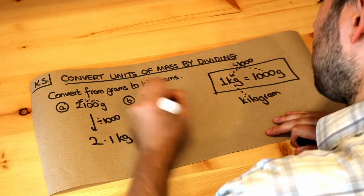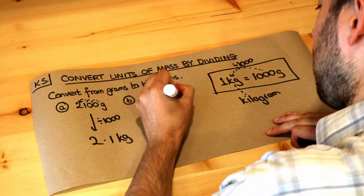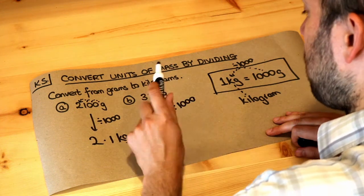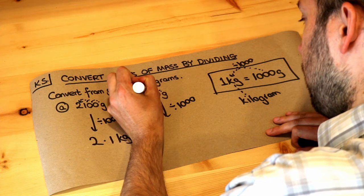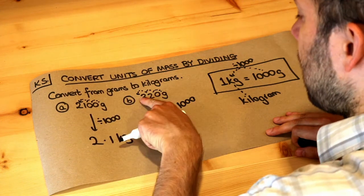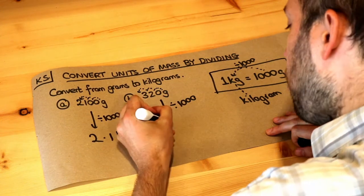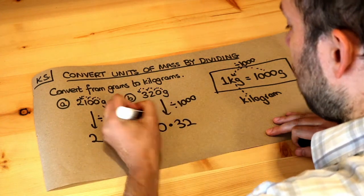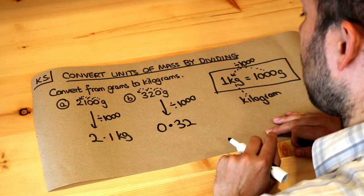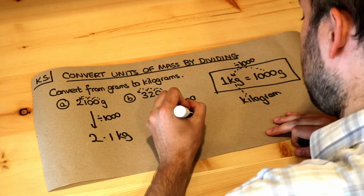What about this one? 320 grams - again we need to divide by a thousand. The decimal point is currently at the end, and we're moving one, two, three places to the left. It's just before the three, so it's point three two. We don't need the zero at the end, and we need to put a zero in front of that decimal point. So the answer is 0.32 kilograms.